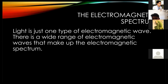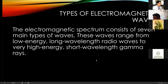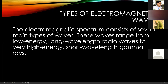The electromagnetic spectrum — light is just one type of electromagnetic wave. There is a wide range of electromagnetic waves that make up the electromagnetic spectrum. The electromagnetic spectrum consists of seven main types of waves. These waves range from low energy, long wavelength radio waves to very high energy, short wavelength gamma rays.